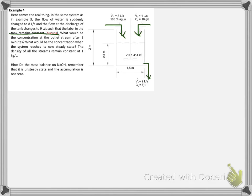8 kilograms from stream 1, plus 1 kilogram from stream 2, gives us 9 kilograms per second at the inlet. At the outlet, we have 9 kilograms per second. That means that this level is not going to change after we change this flow.